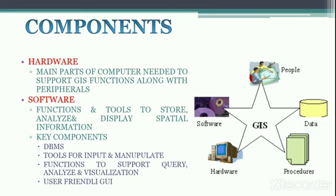GIS software provides the functions and tools needed to store, analyze and display geographic or spatial information. The key components of GIS software include a database management system, tools for input and manipulation, functions to support geographic query, analysis and visualization, and a user-friendly graphical user interface for easy access to all these tools.